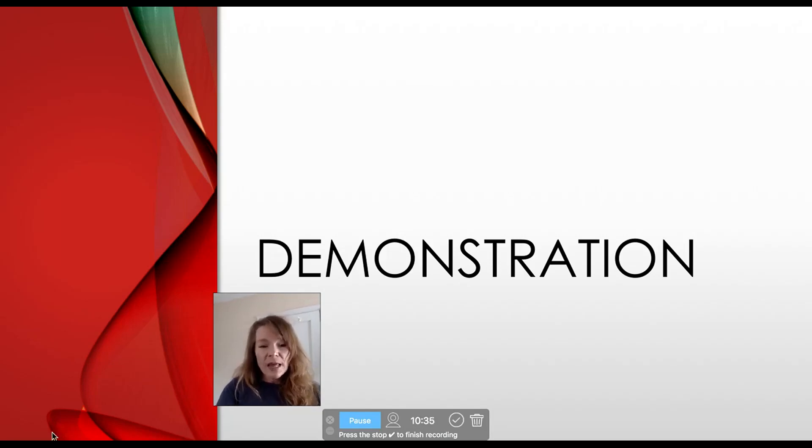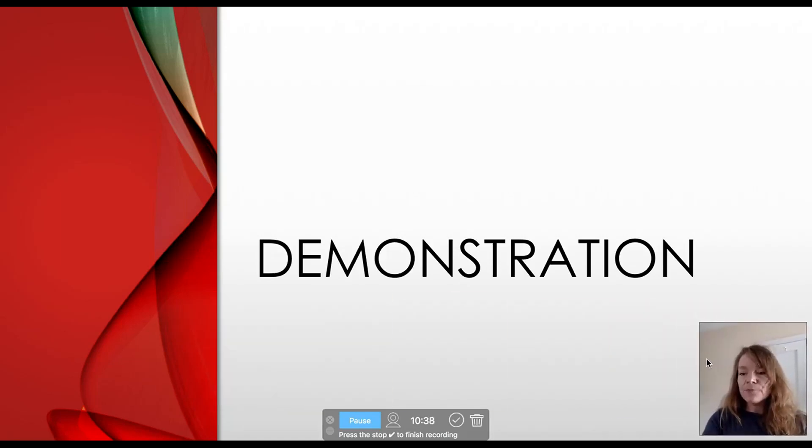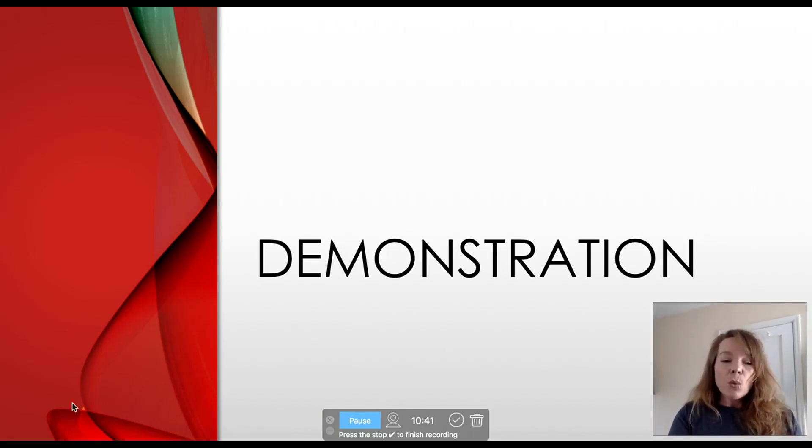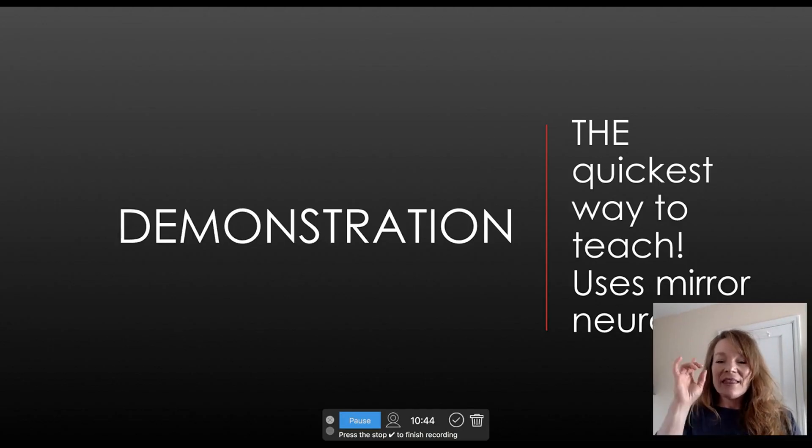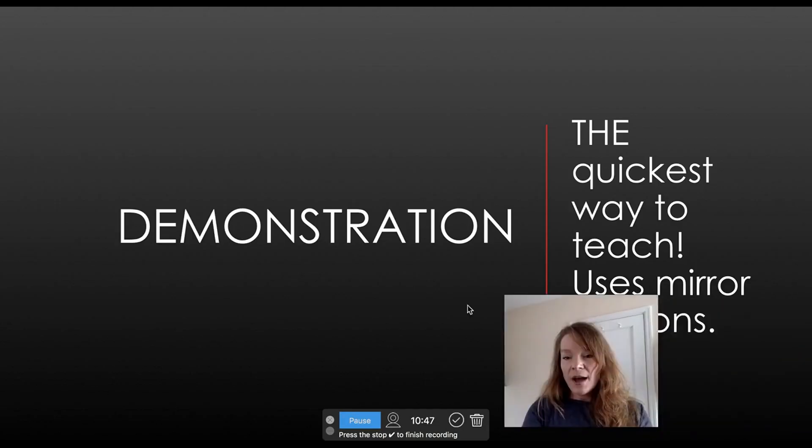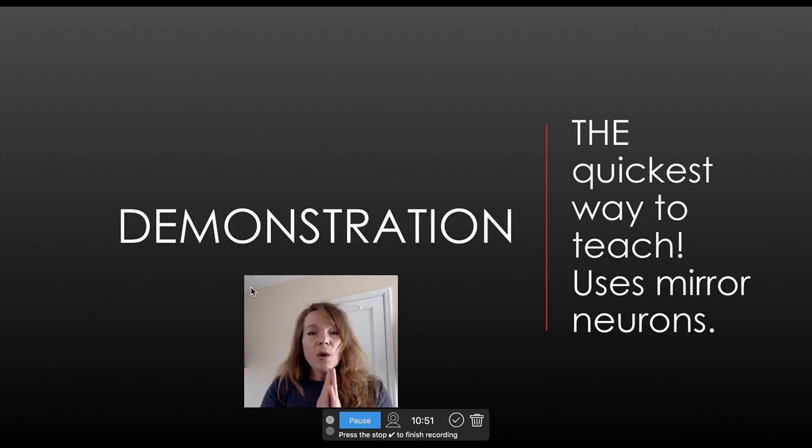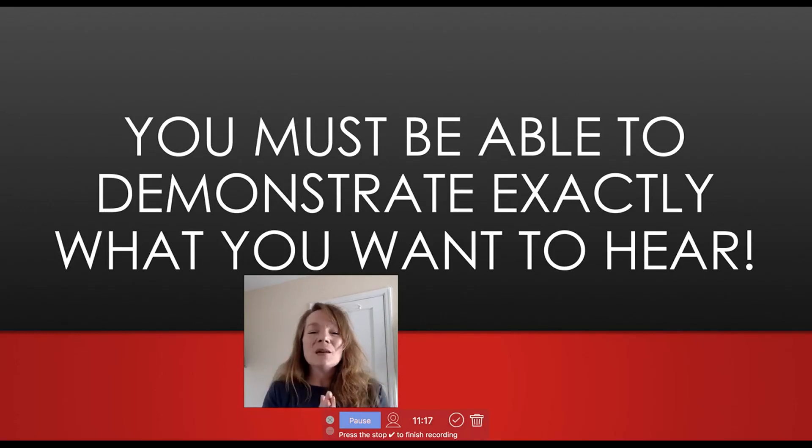Two further concepts. Demonstration. Demonstration in rehearsal is the quickest way to teach. Why? Because it uses mirror neurons. When I demonstrate something to you, your instinct is to parrot it back because we're human beings and we learn by listening and watching. Mirror neurons tell us how to do something when we're observing it in another person. It's the quickest way to get what you want.